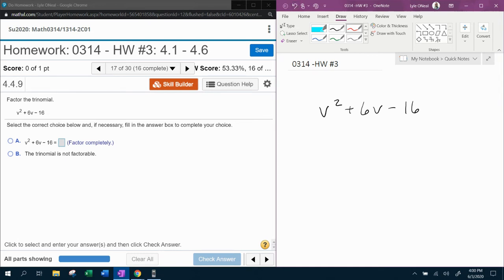So you need the recipe for factoring a trinomial. The recipe has three ingredients. First ingredient, parentheses. Second ingredient, we need to read the signs. And the third ingredient, we're going to fill in the blanks.